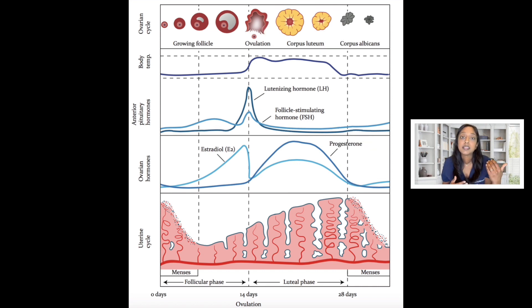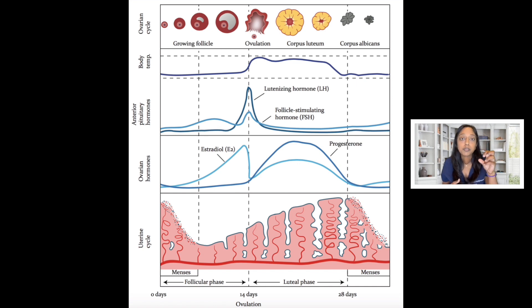If a pregnancy implants, the corpus luteum will continue to survive and continue to produce estrogen and progesterone. If a pregnancy does not implant, the corpus luteum will regress and die off, and that estrogen and progesterone will decline, and then the patient will have a period. That's essentially what happens in the menstrual cycle and what happens in ovulation, which is just the release of the egg.